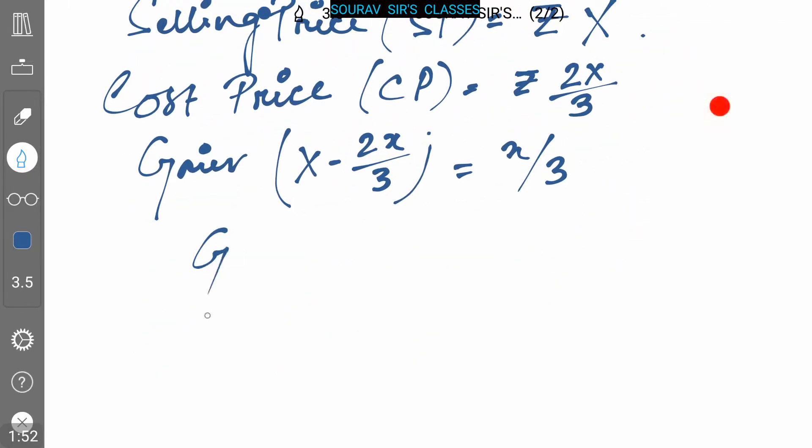The gain percent is (x/3) divided by (2x/3) multiplied by 100. As we have to find the percent value, we multiply by 100.